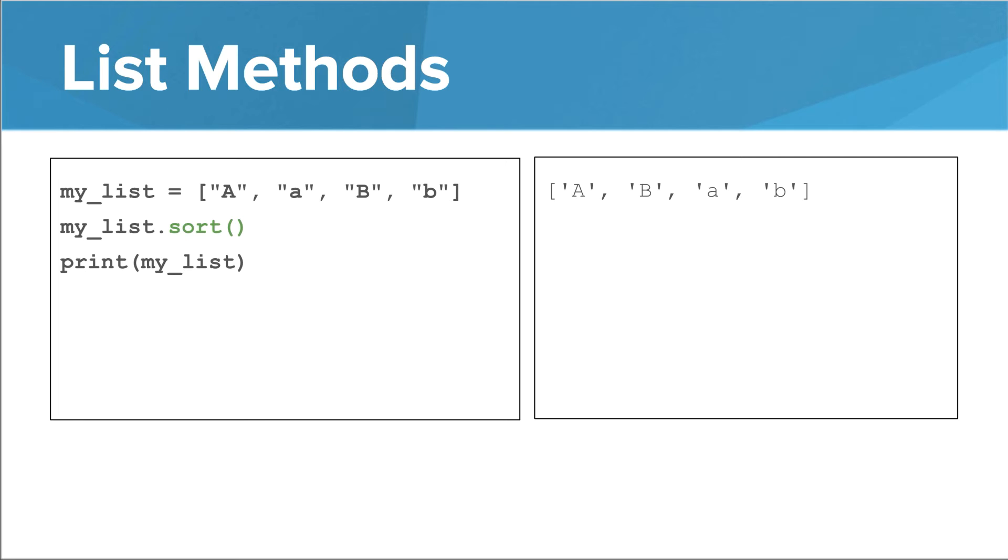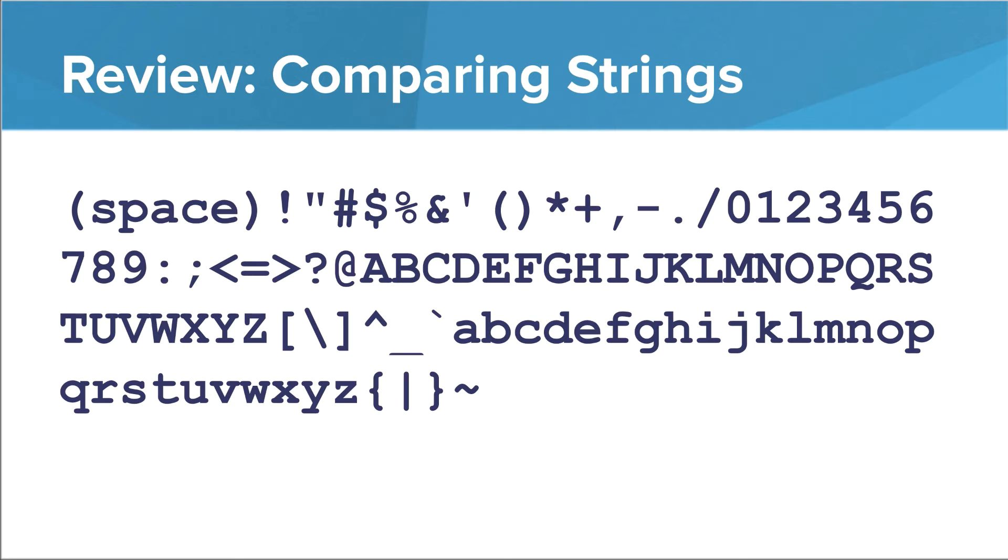When you sort strings, remember that strings are sorted in Python's order, which is sort of like alphabetical order except, for instance, all capital letters come before all lowercase letters. Here's the slide from the control flow module that lists the sort order for some common characters and strings. You can refer to it whenever you want to predict how strings will be sorted by Python.